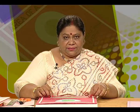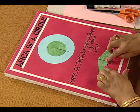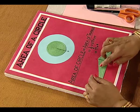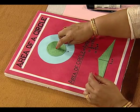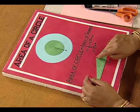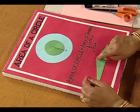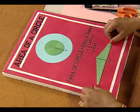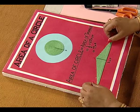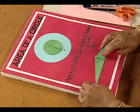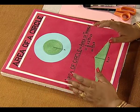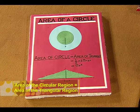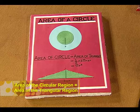We have seen that after arranging these threads, the innermost thread forms the topmost layer here. And as a result, we have a triangular region. Because the size and number of threads used in both cases are the same, the area of the circle is equal to the area of the triangle.